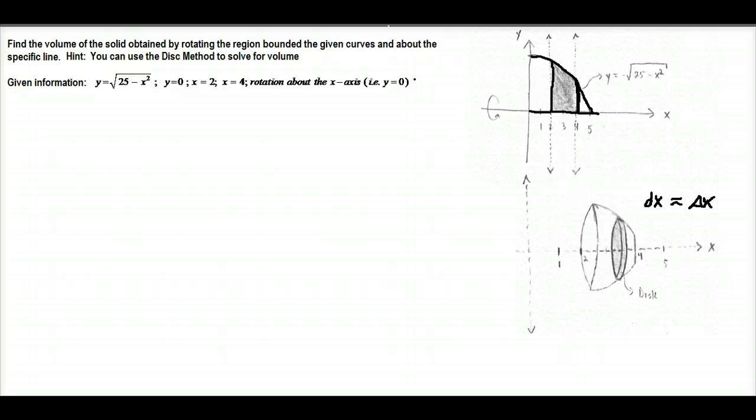Now, to use the disk method here, we know that what we want to do is use the area of a particular circle. Because a disk looks a lot like a circle. So here, we're using the fact that we know the area of a circle is pi r squared, where r is the radius. And so here you'll see that what's changing as we go from x equals 2 to x equals 4 here is the radius of this particular solid, which is actually controlled by the y values of this function here.